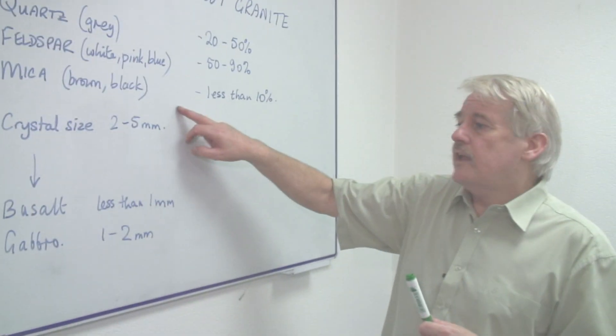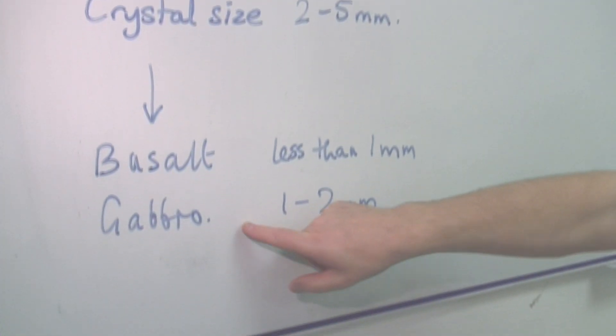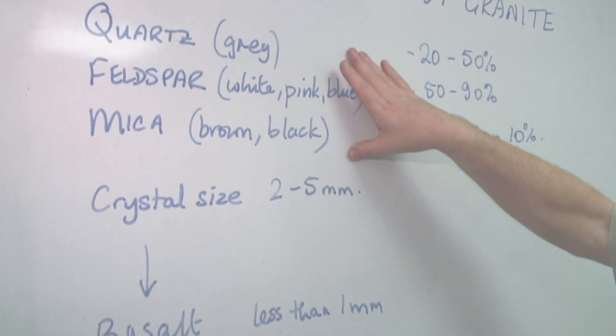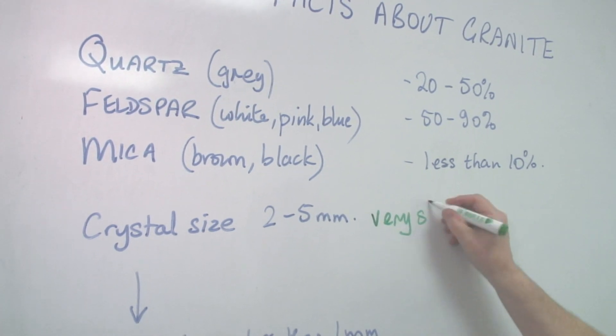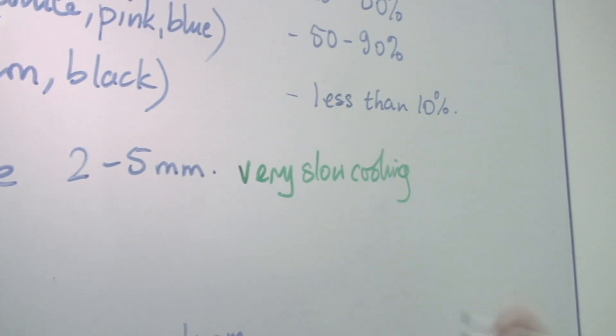This composition we get two other types of rock, basalt and gabbro. Now the difference is the granite cooled very slowly, so it's very slow cooling, which produces big crystals.